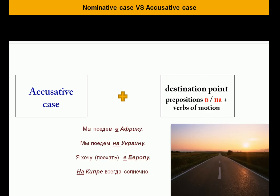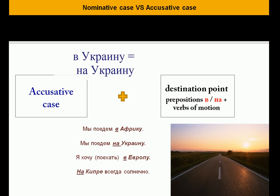Also, you would use the accusative case form when talking about the destination point with prepositions в or на and verbs of motion. Мы поедем в Африку — we will go to Africa. Мы поедем на Украину — we will go to Ukraine. Recently the Ukrainians have demanded that people say в Украину instead of на Украину, so you can still say мы поедем в Украину — it doesn't change anything. Я хочу поехать в Европу — I want to go to Europe.